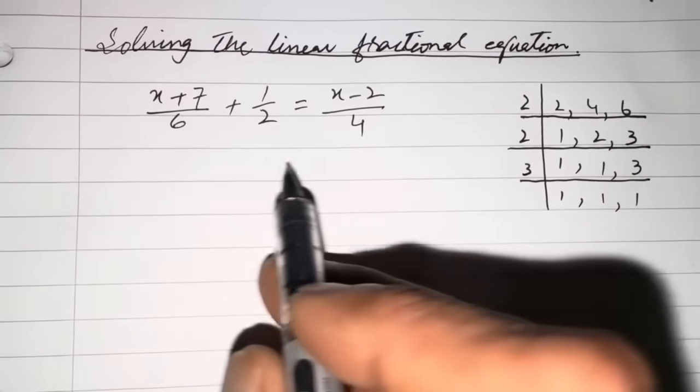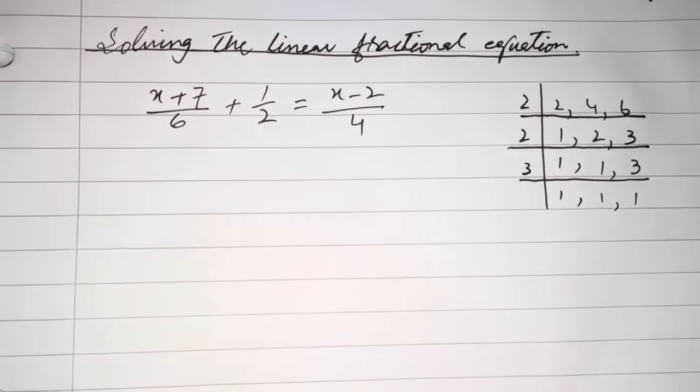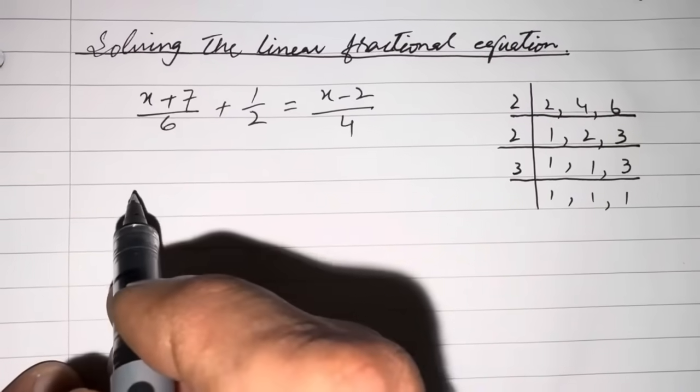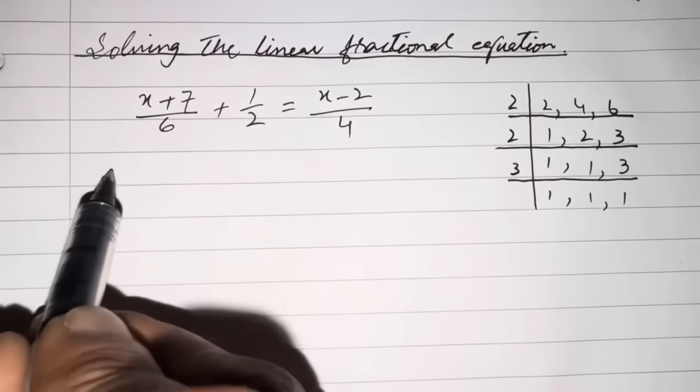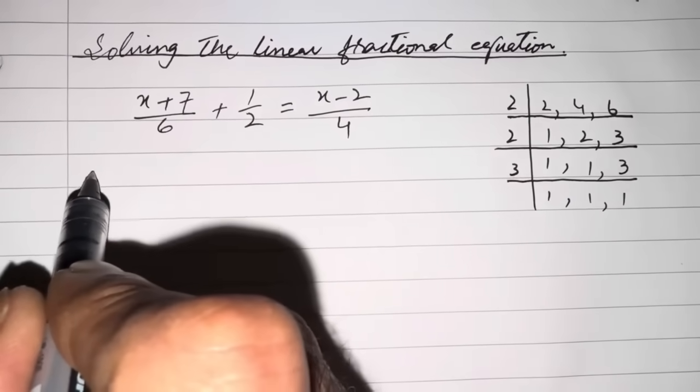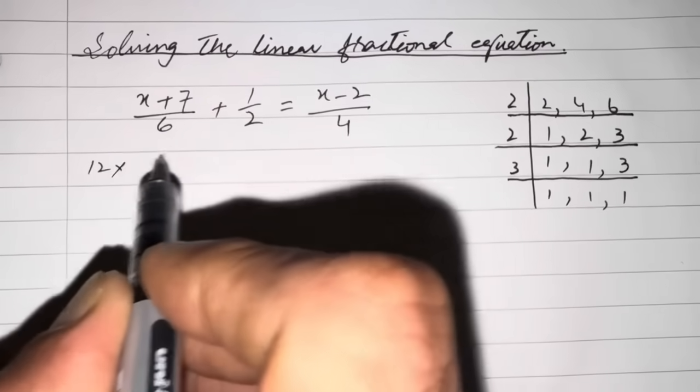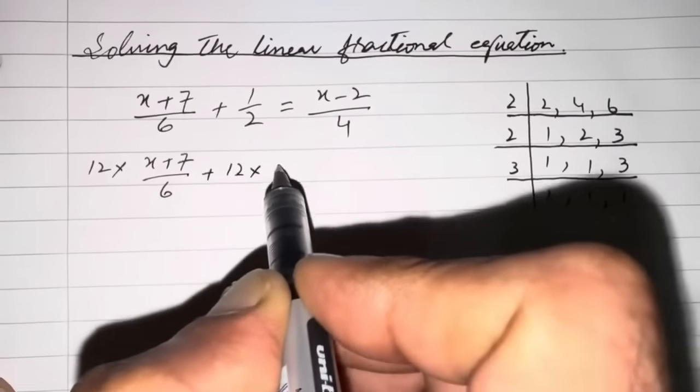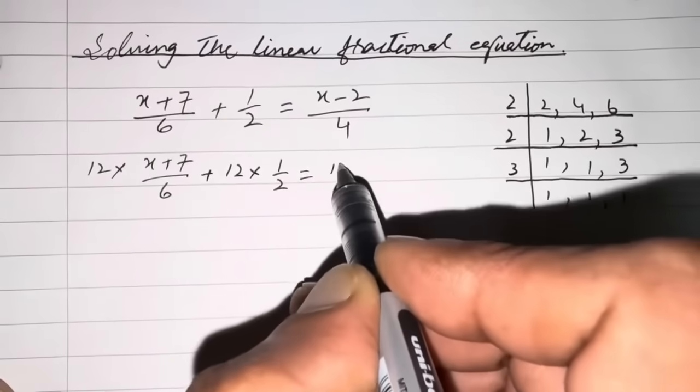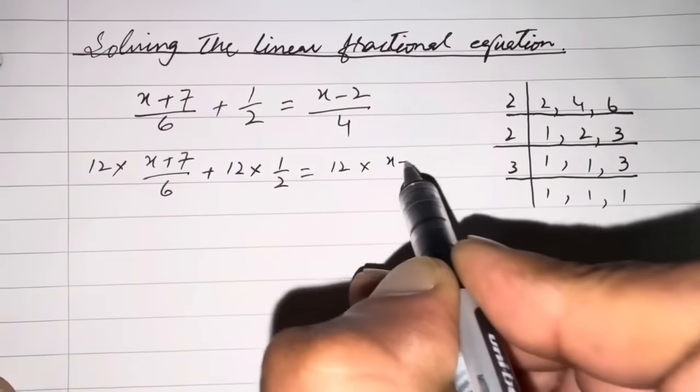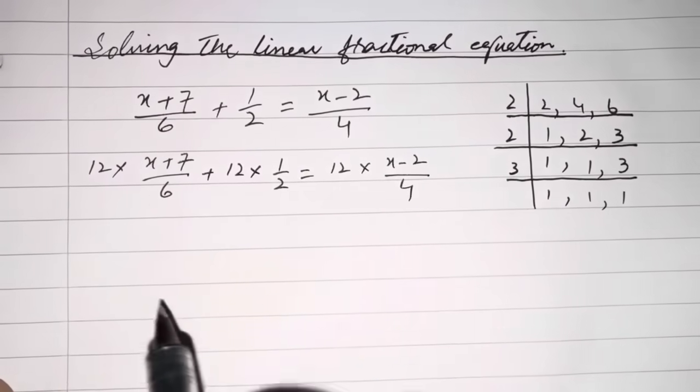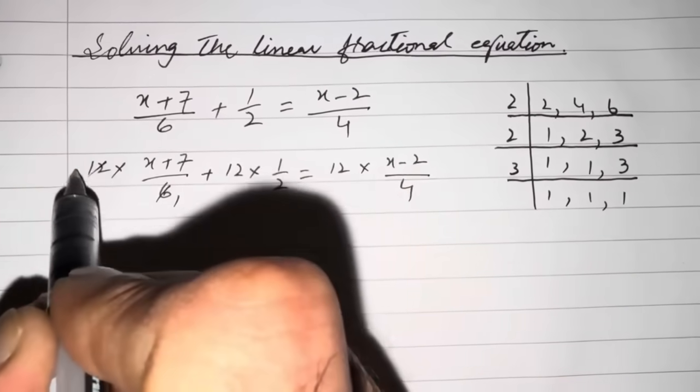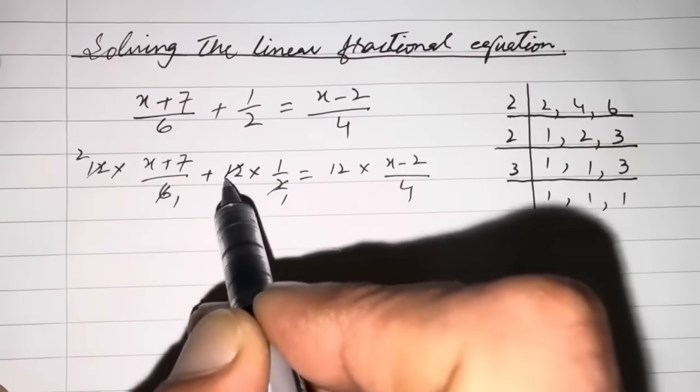Now we are going to multiply the whole equation by 12. The equation becomes: 12 times (x + 7)/6 plus 12 times 1/2 equals 12 times (x - 2)/4. Now divide: 6 goes into 12 twice, 2 goes into 12 six times, and 4 goes into 12 three times. We have removed the denominators from the equation.